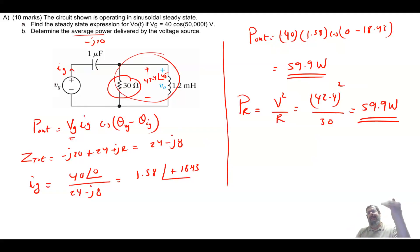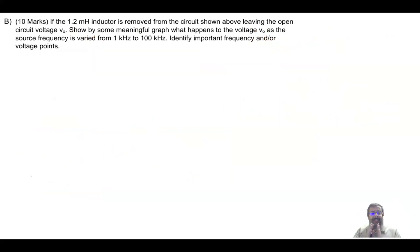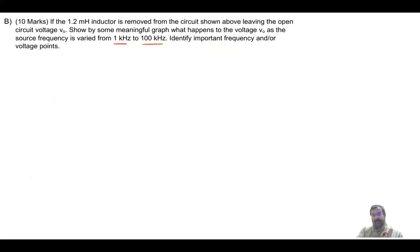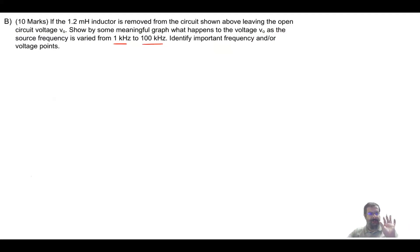Now let's look at Part B. It says: if the 1.2 millihenry inductor is removed from the circuit, and V out is now across the resistance, show by a meaningful graph what happens to V out as the source frequency changes from 1 kilohertz to 100 kilohertz. Identify important frequency and voltage points. This is essentially a filter question — a concept we haven't covered before, but it's a very simple filter.